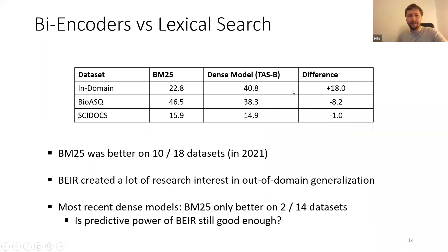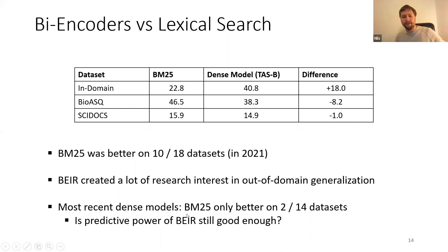In-domain — that's what people did before — we saw dense models work extremely well, with plus 18 points performance. But then out of domain, these dense models don't work as well. However, recent dense models have become really strong. The latest numbers show that lexical search is only better on 2 out of 14 datasets.